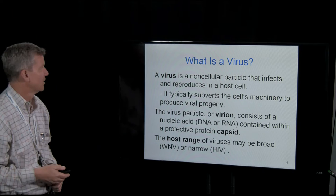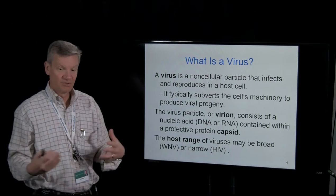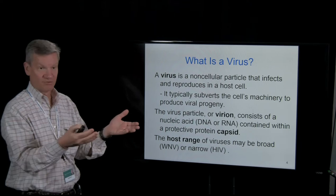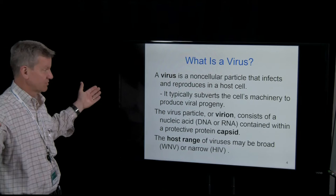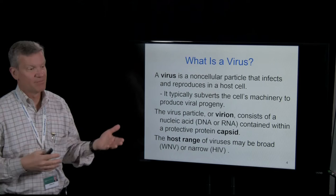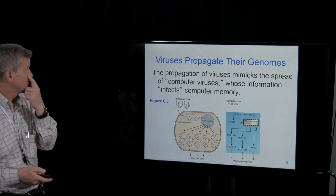The host range of a virus can be very broad. West Nile virus, for example, infects mosquitoes, birds, and humans — that's a very broad range. But HIV only infects people and will also infect chimpanzees, but it doesn't cause the same disease in chimpanzees that it does in humans.